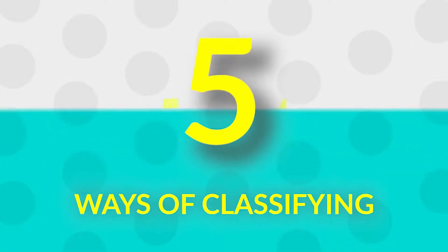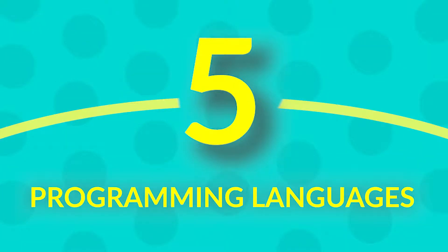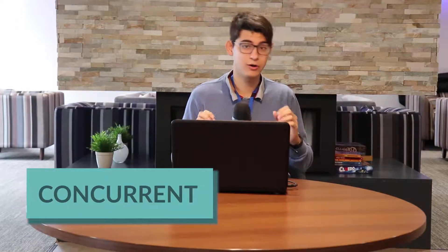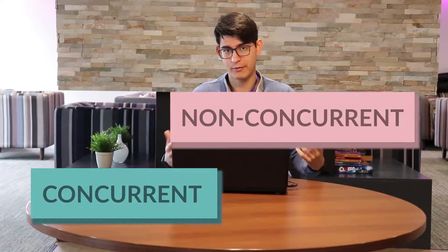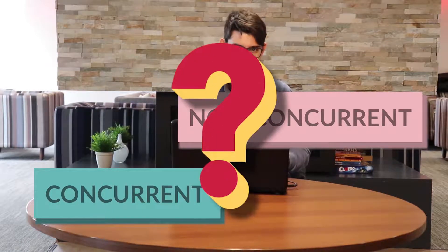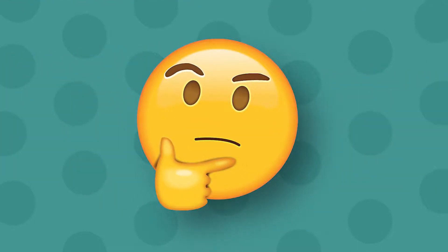This is the five ways of classifying programming languages. Five. And to finish, we've got concurrent or non-concurrent programming languages. What is this? I know it sounds a bit weird, a bit strange, this term. I thought the same when I heard it.